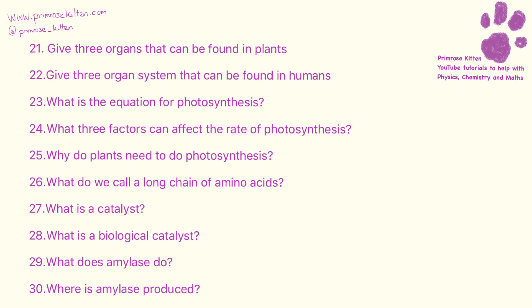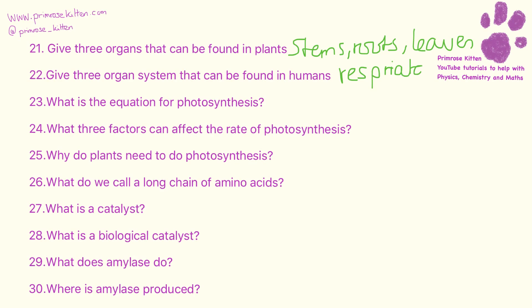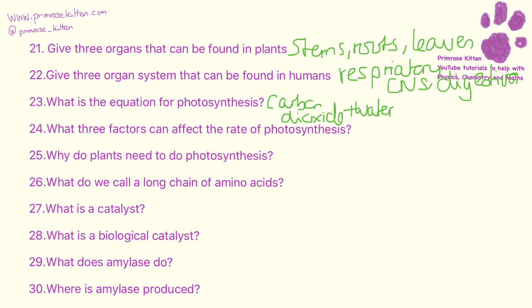Three organs that can be found in plants. Examples of organ systems include the respiratory system, the central nervous system, the digestive system, or the circulatory system. The equation for photosynthesis is: carbon dioxide plus water goes to glucose plus oxygen.